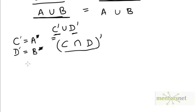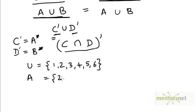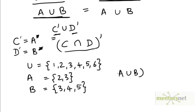We can quickly verify this using a simple example. Let's consider a situation where U is the set {1, 2, 3, 4, 5, 6}, A is the set {2, 3}, and B is the set {3, 4, 5}. What would be A union B complement? A union B complement would be the elements that neither belong to A nor to B. A union B would be the set {2, 3, 4, 5}, so everything outside of that would be in the complement of A union B. So that's {1, 6}.